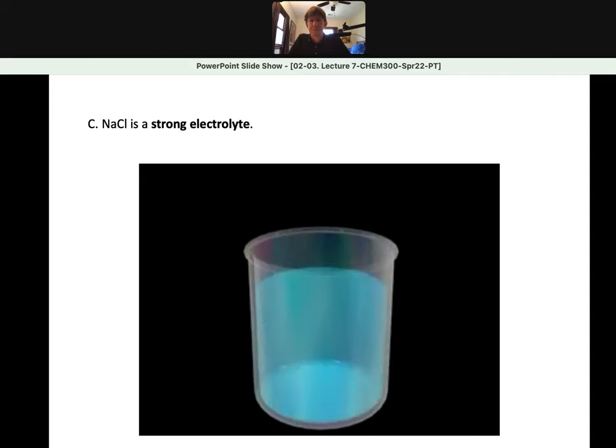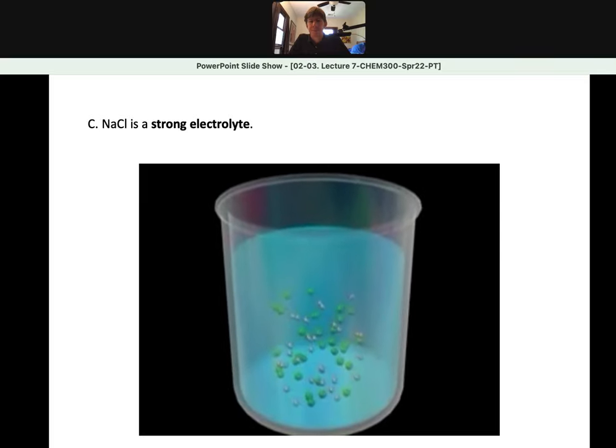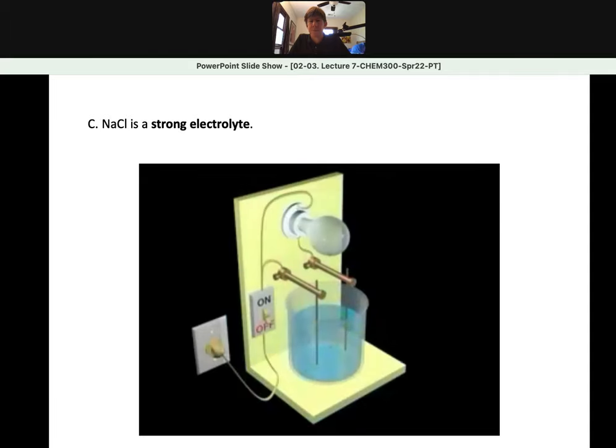When sodium chloride is dissolved in water, it forms a solution of separated sodium and chloride ions. The presence of ions in the solution is responsible for the fact that the solution is a conductor of electricity.